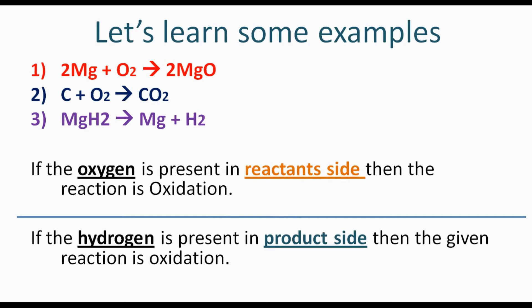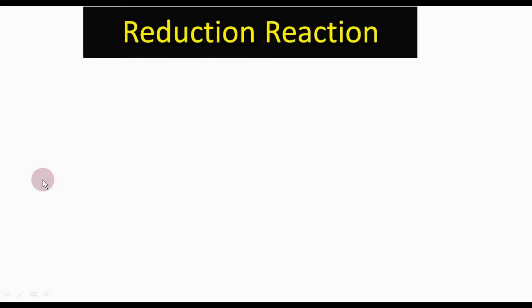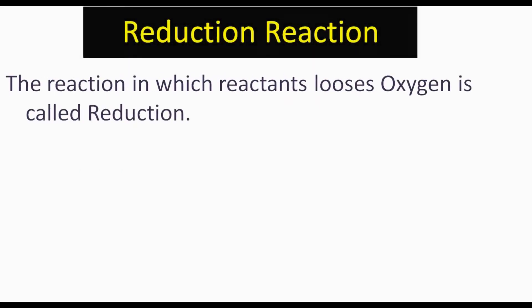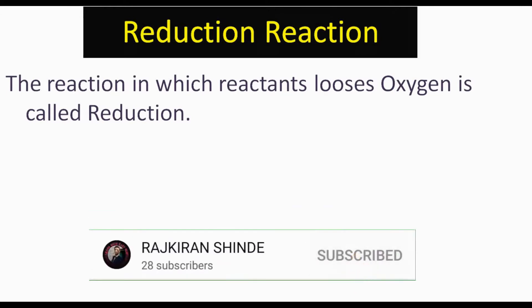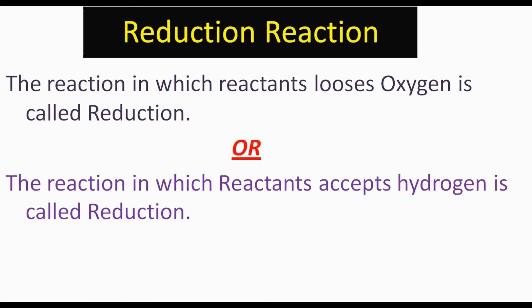So there are two possibilities for oxidation: one is oxygen in the reactant side, and the other is hydrogen in the product side. Now let's learn reduction reaction. The reaction in which a reactant loses oxygen is called reduction. There is another definition: the reaction in which reactants accept hydrogen while losing oxygen is called a reduction reaction.